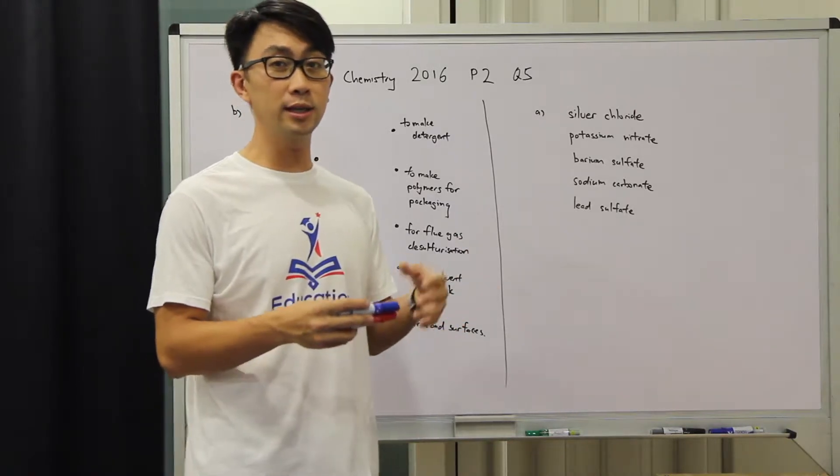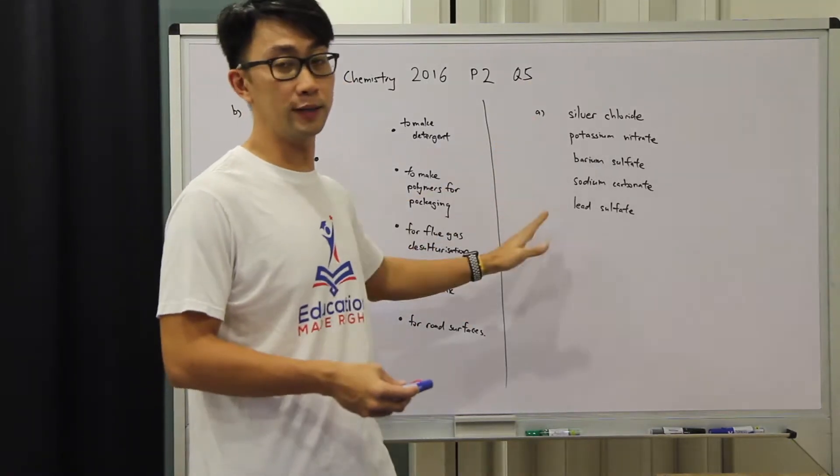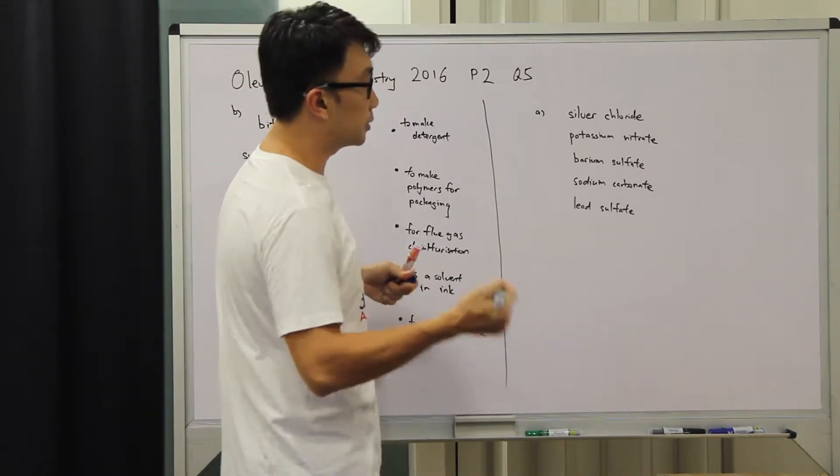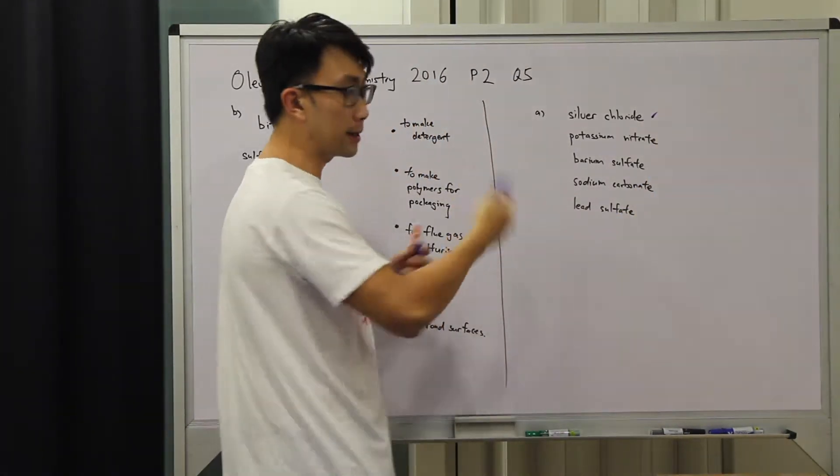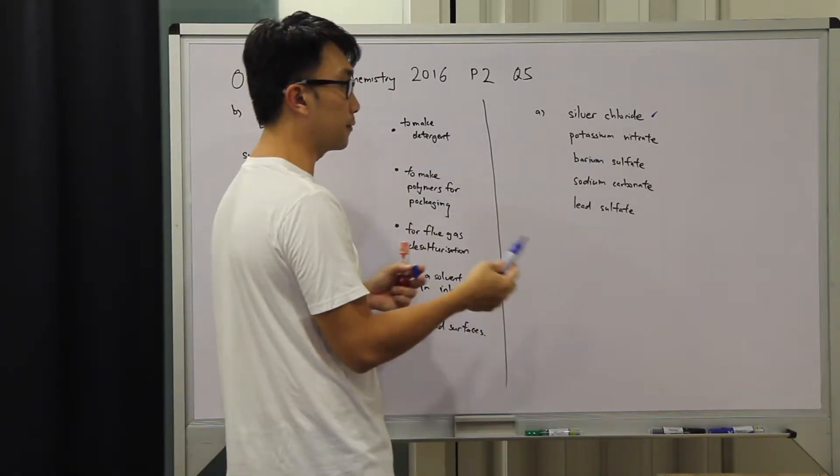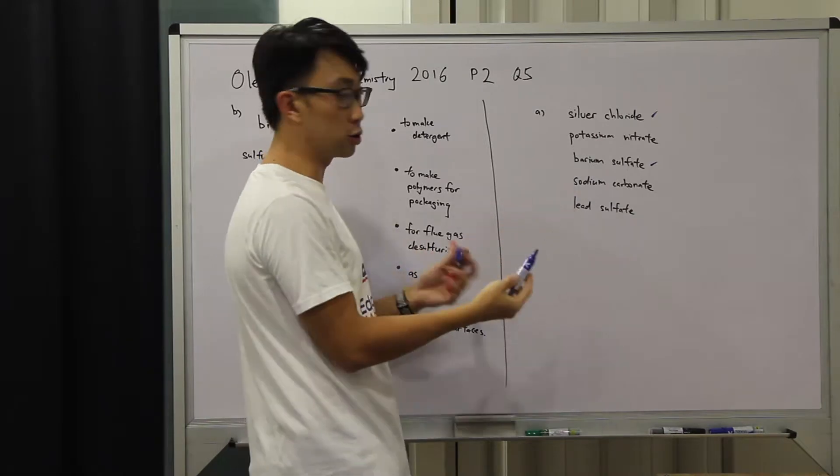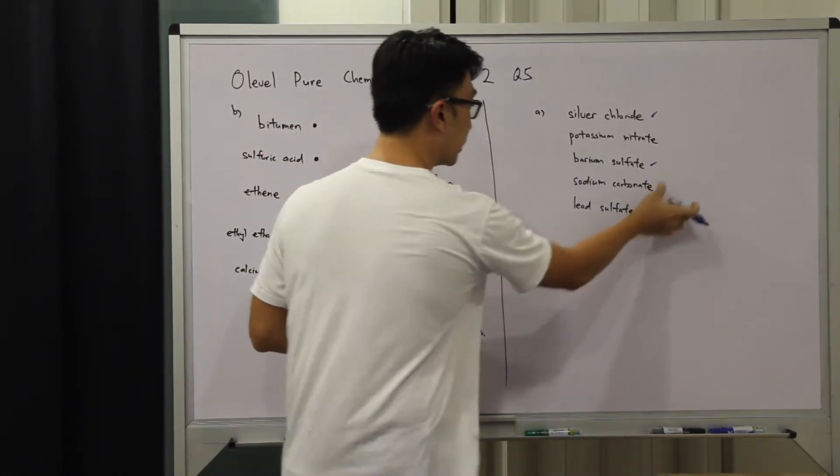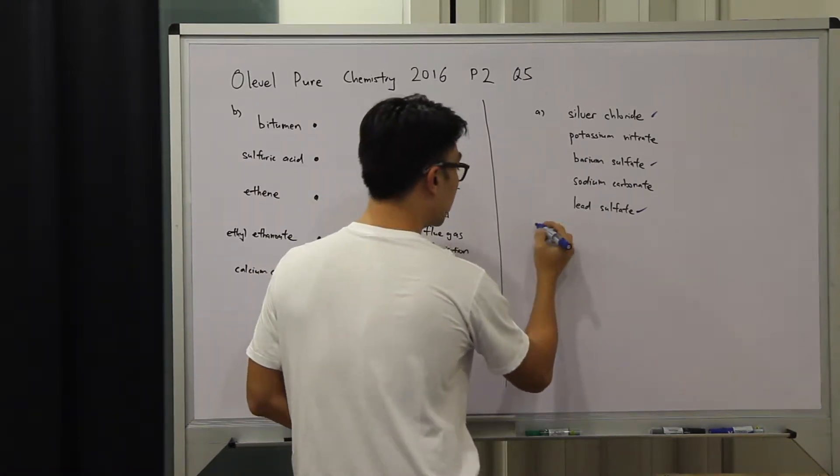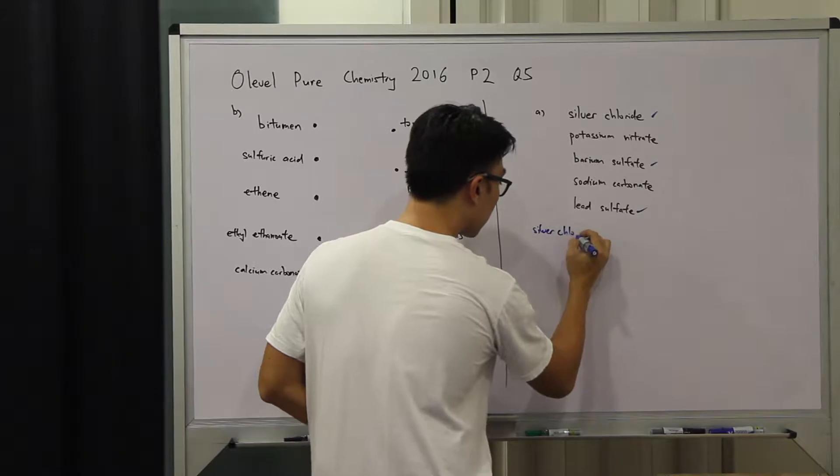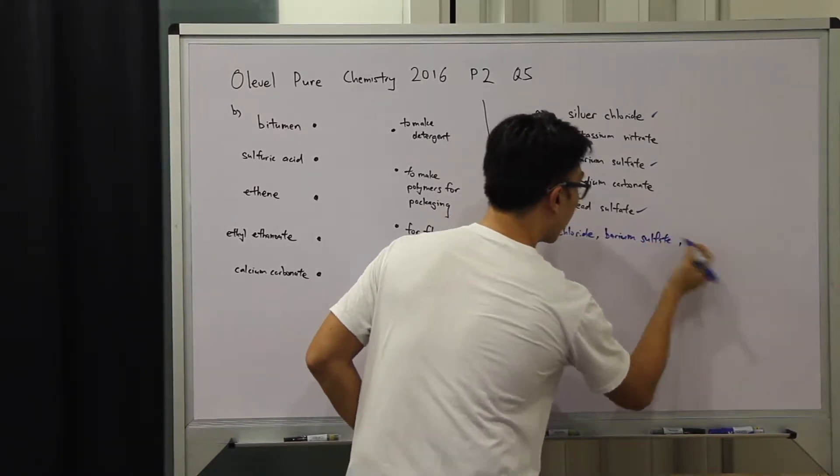First we must understand that precipitation reactions are used to make salts that are insoluble in water, so they come out as a precipitate. We need to identify which of these are insoluble. That would be silver chloride. All group 1 salts are soluble in water because they are very reactive. We have got barium sulphate as the other one. Sodium carbonate is also soluble. And last but not least we have got lead sulphate. So the 3 salts are silver chloride, barium sulphate and lead sulphate.